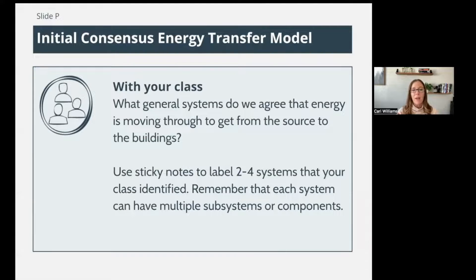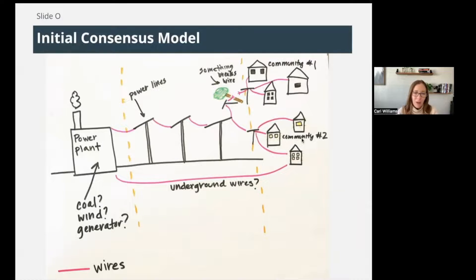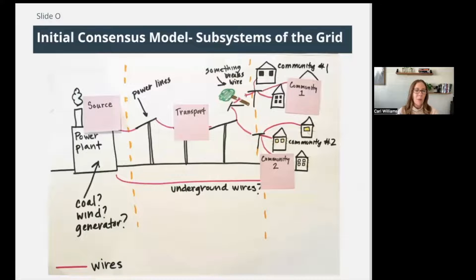I want you to think about: if I could add two or three or four sticky notes, what would I add to this model to name these subsystems? What would you call this one on the left? What about the one in the middle? What would you call the one on the right? Think about it for a moment. Students often come up with these ideas — is it similar to what you were thinking? A 'source' is where the power comes from, it gets 'transported' or moved in the middle, and over on the right it could be the 'neighborhood' or 'community' — where the power goes.